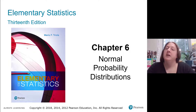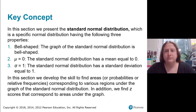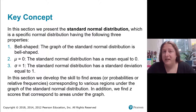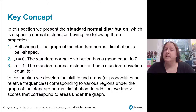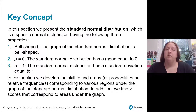Today we're going to begin our exploration of a very special family of continuous probability distributions, namely normal probability distributions. We're going to start off by talking about the standard normal distribution — what it is, its key properties, how to find areas underneath the graph, and we'll be revisiting z-scores. Along the way, we'll also talk a little about continuous probability distributions and the uniform probability distribution.